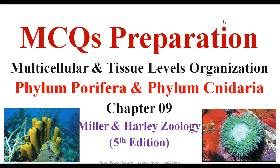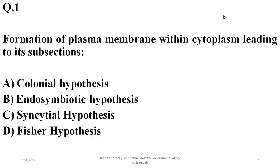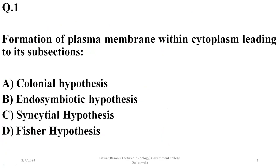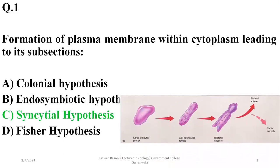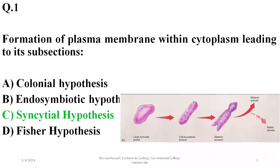Question number one: formation of plasma membrane within the cytoplasm leading to its subsections was basically the hypothesis of syncytium, which led to multicellularity in living organisms. The right option is C — that formation of cell membrane within compartments of the cell led to the formation of a multicellular initial mass, which was a bilateral ancestor that changed into radial animals as well.